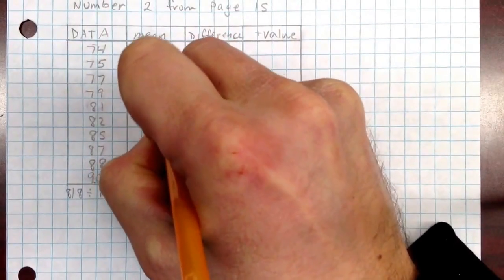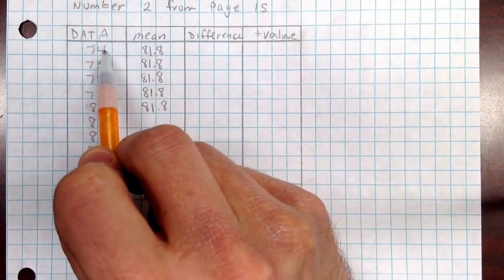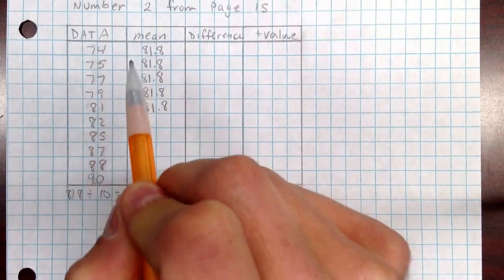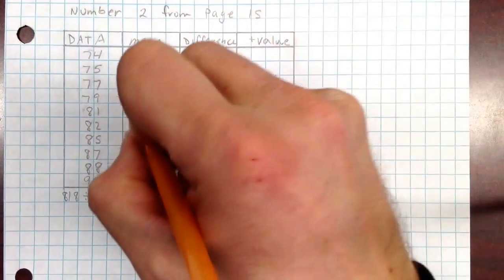After that then you're going to take the difference of the data minus the mean. So it's going to be 74 minus 81.8, 75 minus 81.8 and so on.